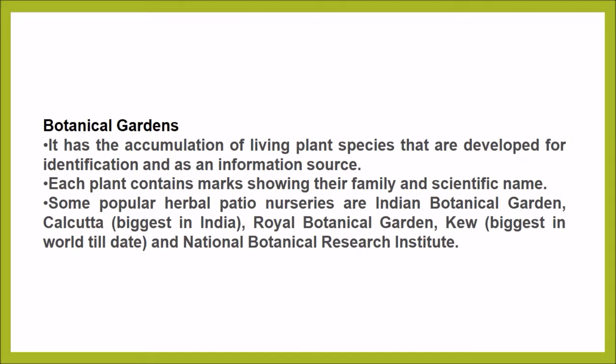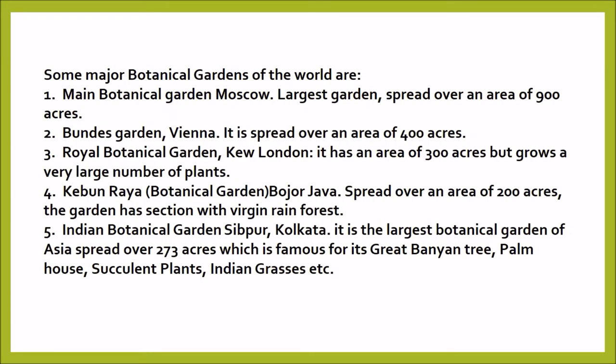Botanical gardens have the accumulation of living plant species that are developed for identification and as an information source; each plant contains marks showing their family and scientific name. Some popular botanical gardens are the Indian Botanical Garden at Calcutta, which is the biggest in India; the Royal Botanical Garden at Kew, which is the biggest in the world; and the National Botanical Research Institute. The Main Botanical Garden at Moscow is the largest garden spread over an area of 900 acres, and the Bunce Garden at Vienna spreads over an area of 400 acres. The Royal Botanical Garden in Kew, London, has an area of 300 acres but grows a very large number of plants.